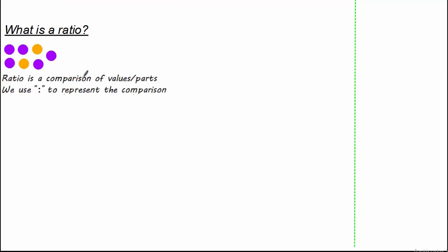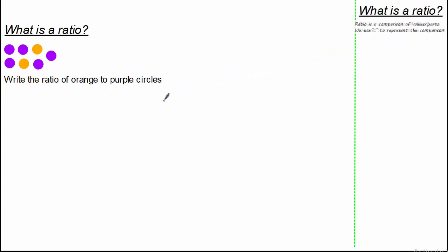What is ratio? Well, ratio is a comparison of values or parts. We use a colon to represent the comparison. For example, if we were asked to compare or write the ratio of orange to purple circles, we write orange colon purple. Simply counting we can see we have 2 orange to 5 purple, so we write 2 to 5.